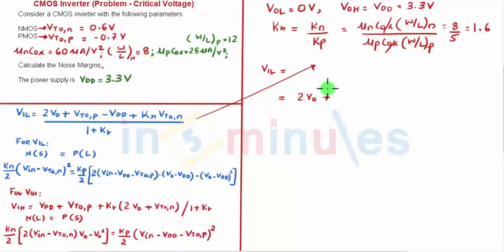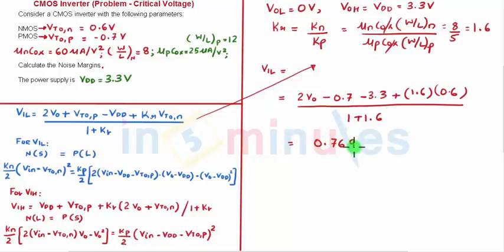VIL will be in terms of V out plus VTP which is nothing but minus 0.7 minus VDD 3.3 plus KR 1.6 into VTN which is nothing but 0.6 upon 1 plus KR which is nothing but 1 plus 1.6. This is nothing but 0.769 V0 minus 1.169. Let's call this as equation 1.